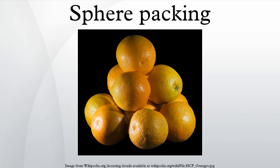Touching pairs, triplets, and quadruples: the contact graph of an arbitrary finite packing of unit balls is the graph whose vertices correspond to the packing elements and whose two vertices are connected by an edge if the corresponding two packing elements touch each other. The cardinality of the edge set of the contact graph gives the number of touching pairs, the number of three-cycles gives the number of touching triplets, and the number of tetrahedrons gives the number of touching quadruples. In three-dimensional Euclidean space, non-trivial upper bounds on the number of touching pairs, triplets, and quadruples were proved by Bezdek and Reid at the University of Calgary.